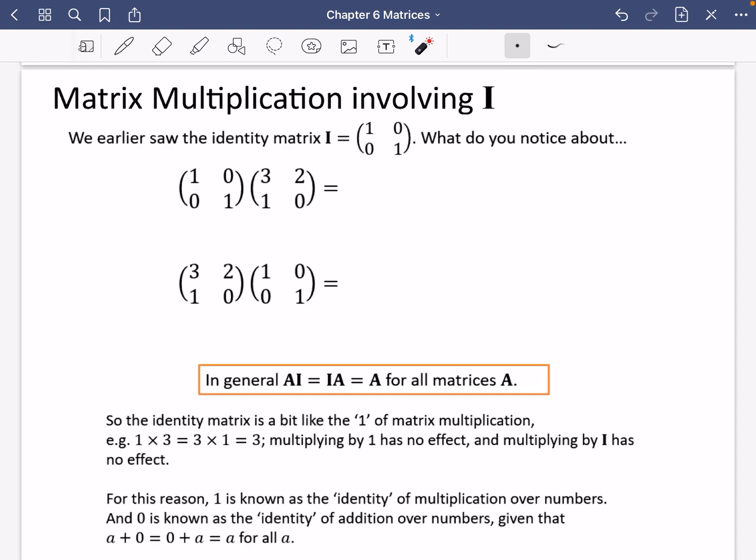Okay, earlier on we mentioned the identity matrix and we're going to be looking at matrix multiplication involving I, the identity matrix. It's got that leading diagonal of ones and we want to think about what happens when we do some of these multiplications.